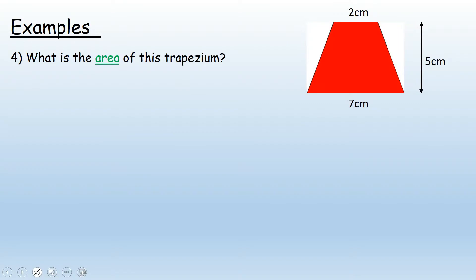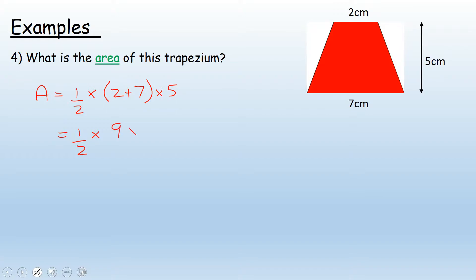Let's look at our next example. We've got this trapezium, and the area is a half multiplied by — the top which is 2, plus the bottom which is 7, multiplied by the vertical height which is 5. So we've got a half multiplied by 9, multiplied by 5. Nine times 5 is 45, so half of 45 is 22.5, or 22 and a half. Lengths are in centimetres so our area is in centimetres squared.